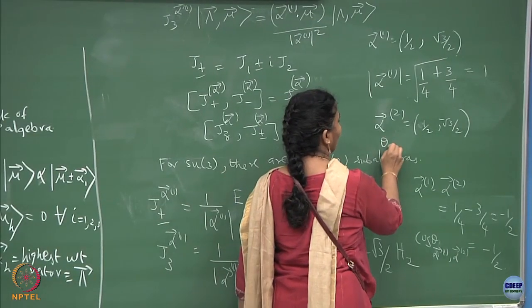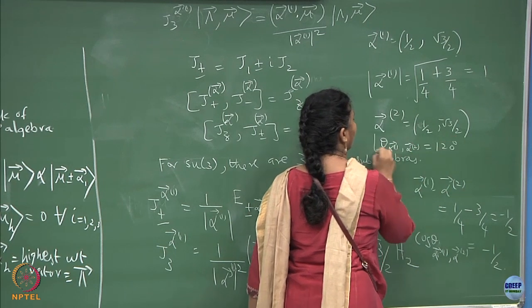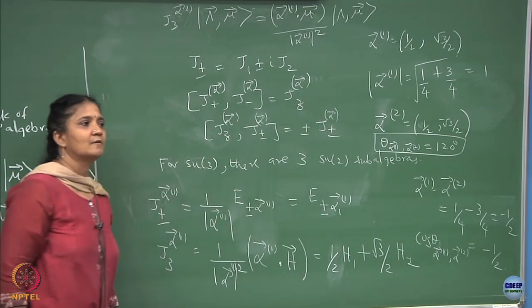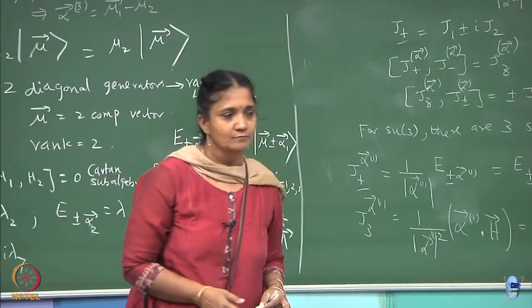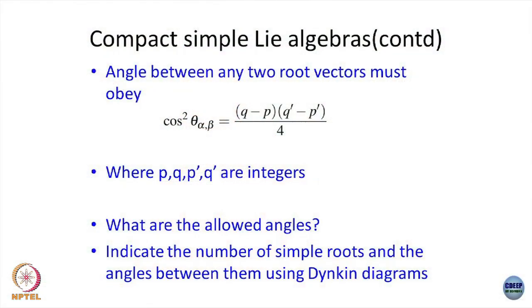So theta, the angle between alpha1 and alpha2, is 120 degrees in the SU(3) case. There are only specific angles. You can check that integers q and p being integers still gives you only specific values like 1/2 — not arbitrary angles, because q should be an integer. In the case of SU(3) you found that the angle between the two simple roots is 120 degrees, and cos of 120 is minus half.